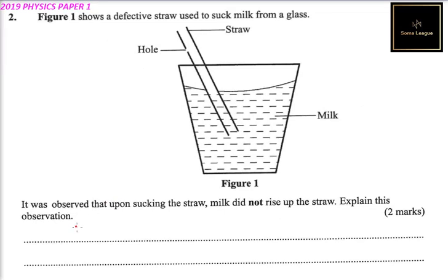Figure one shows a defective straw used to suck milk from a glass. We have the straw, the hole, the milk inside the glass. What was observed is that upon sucking, the milk did not rise up. Explain this observation.